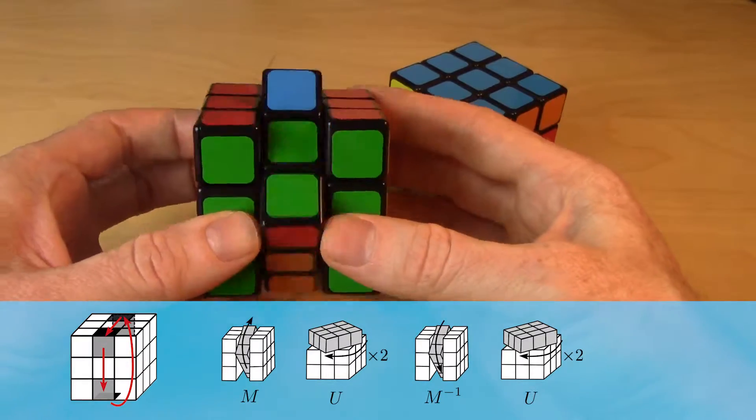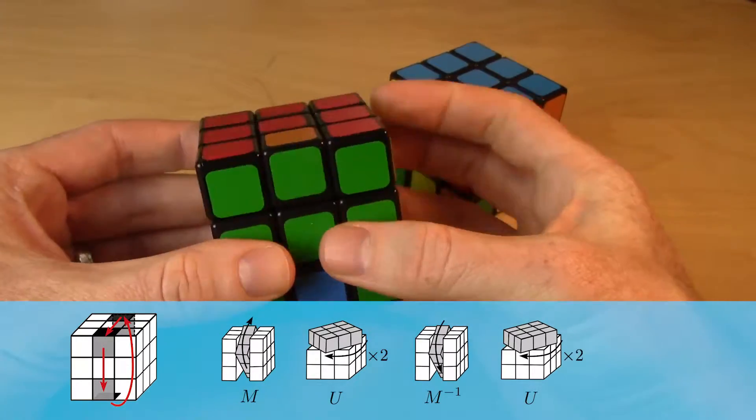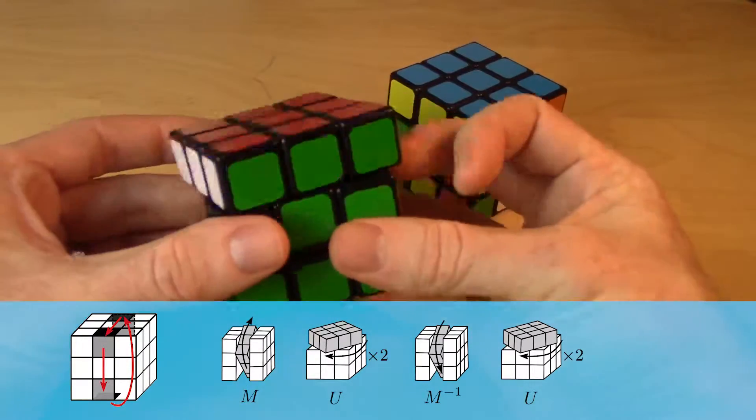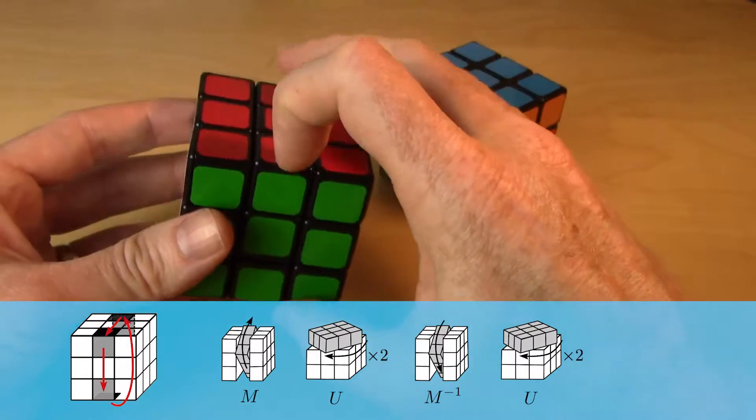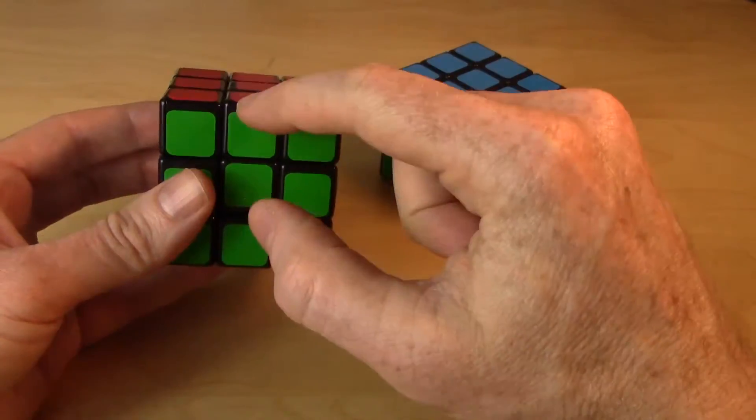So if we do it again, and the third time, everything's back to where it started from. So that is a cycle on three edge pieces.